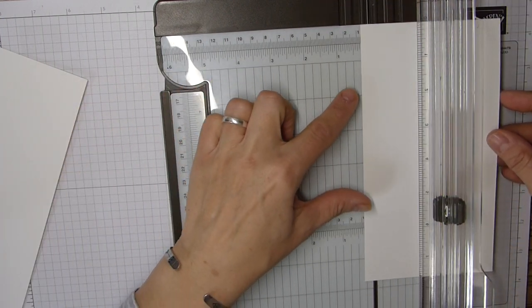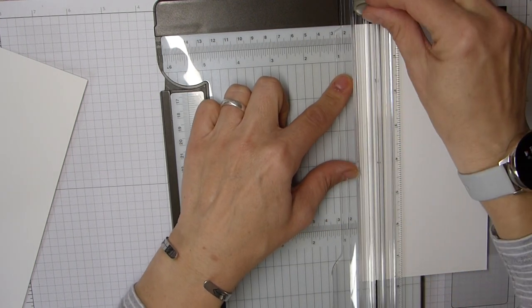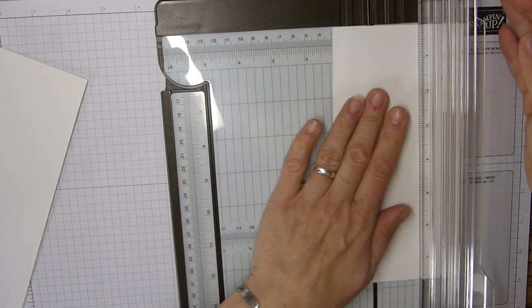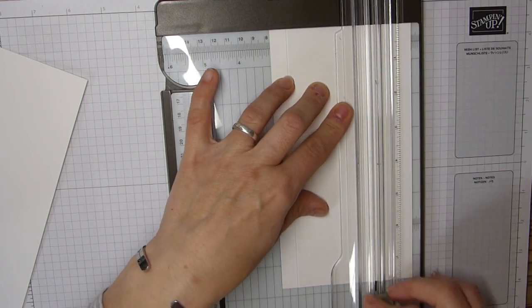On the short side we're going to score at half an inch and three inches, which will be one and seven and a half centimeters.